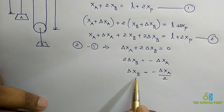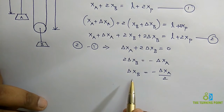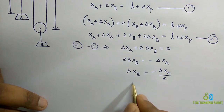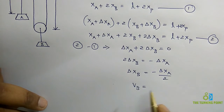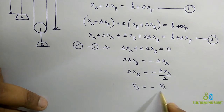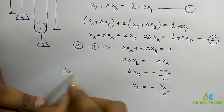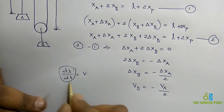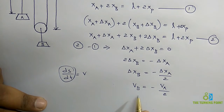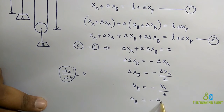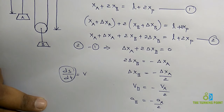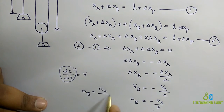If I differentiate this with respect to time, differentiation of distance with respect to time gives velocity. So the velocity of block B equals minus the velocity of block A divided by 2, because ds/dt is velocity. Differentiating once more, the acceleration of block B equals minus the acceleration of block A divided by 2, or in terms of magnitudes, the acceleration of block B equals the acceleration of block A divided by 2.